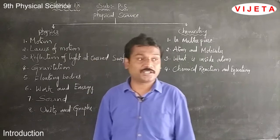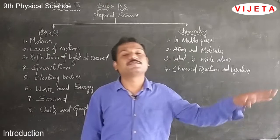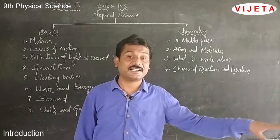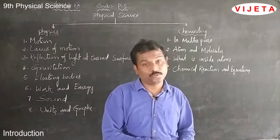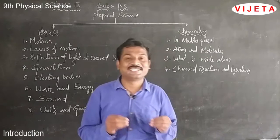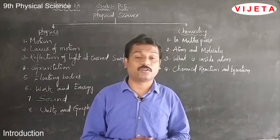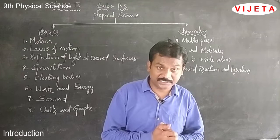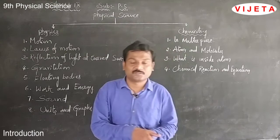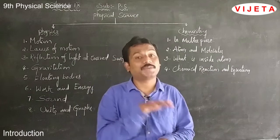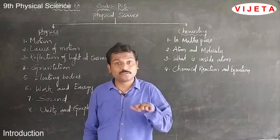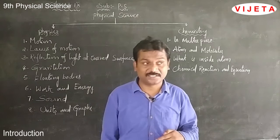Coming to the fifth chapter, floating bodies. We know some objects float on water. How are they able to float? On what basis? In this chapter we are going to discuss all the properties of floating bodies. For this, we need to know certain physical quantities: density, relative density, and pressure. A body with lesser density floats on a higher density medium. For example, if you mix water and petrol, the petrol floats on the water because the density of petrol is less than that of water.